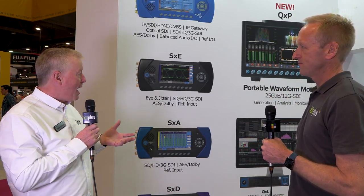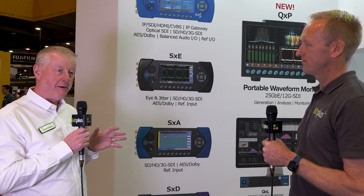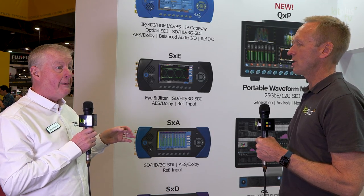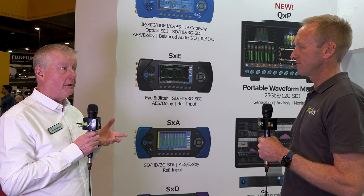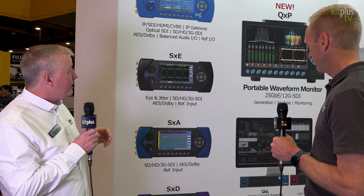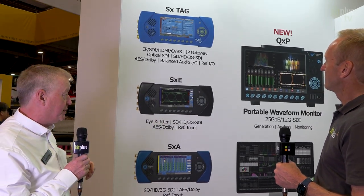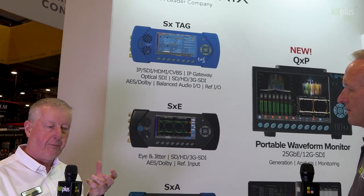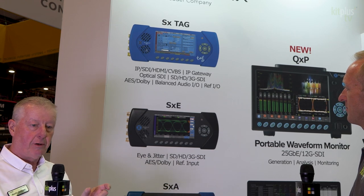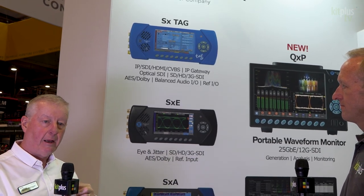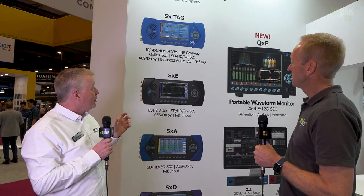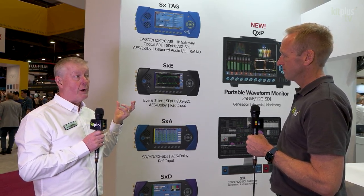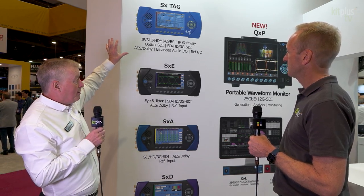At NAB this year we're seeing a divergence between people who still want to stay SDI but are now beginning to focus more into the 12 gig environment, but the buzz is still really about IP. So we're having to provide solutions that cover all bases. We'll use this wall graphic to walk through them. We start with the TAG, which is fantastic for line checking but also has an SFP module providing IP to SDI conversion — great if you're building a proof-of-concept system, because you can use existing SDI content to generate ST 2110 content.